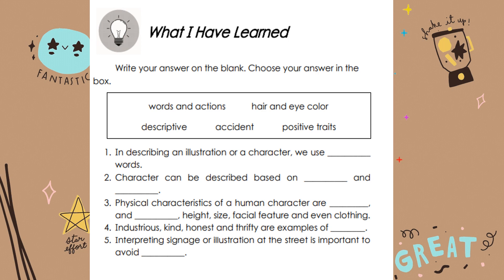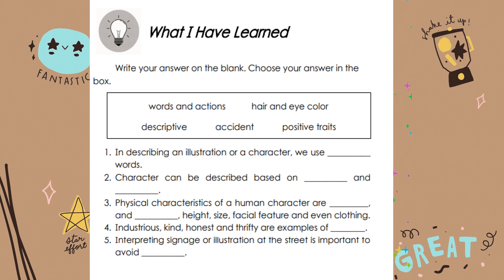For what I have learned, write your answer on the blank. Choose your answer in the box. Here are the choices: words and actions, hair and eye color, descriptive, accident, positive traits. Number 1: in describing an illustration or a character, we use blank words. Number 2: a character can be described based on blank and blank. Number 3: physical characteristics of a human character are blank and blank — height, size, facial feature, and even clothing. Number 4: industrious, kind, honest, and thrifty are examples of blank. Number 5: interpreting signage or illustration on the street is important to avoid blank.